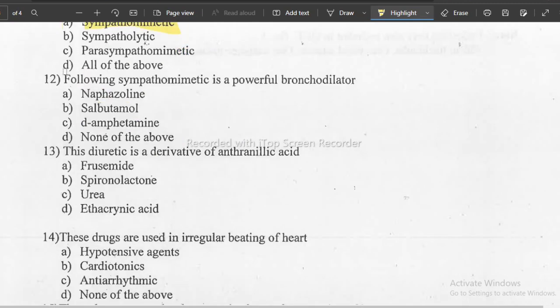Next question number 12: following sympathomimetic is powerful bronchodilator. Which is the bronchodilator that is a parasympathomimetic? The answer is salbutamol.